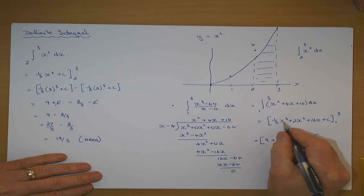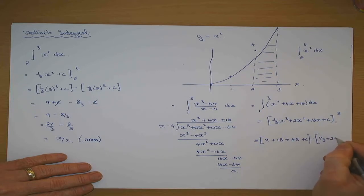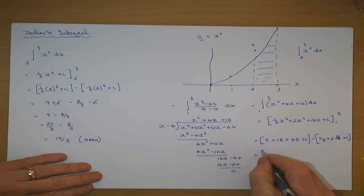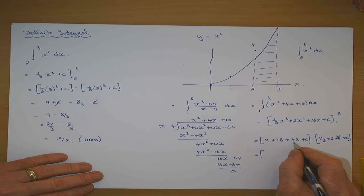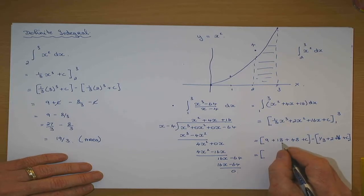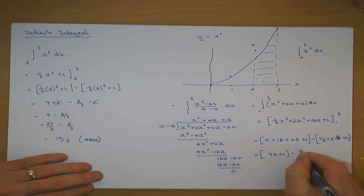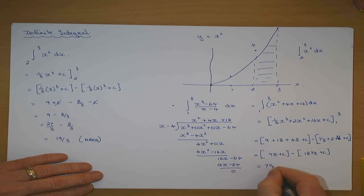Minus — putting in the one: a third of one cubed is a third, and twice one squared is plus two, plus 16, plus c. Adding up the upper-limit side: 9 plus 18 plus 48 gives 75 plus c. The lower-limit side gives: a third plus 2 plus 16 equals 18 and one third plus c. So the expression becomes 75 plus c minus 18 and one third minus c.